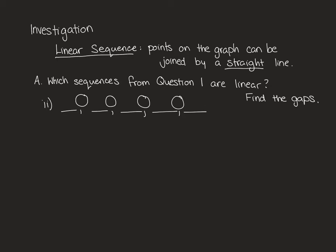The first part of the investigation is part A and they ask you to figure out which sequences from question 1 are linear and to find the gaps. They actually give the first one to you and they say that the second graph is linear. They've put the sequence on the line: 3, 6, 9, 12, 15. Then to prove that it's linear you can find the gap. To get from 3 to 6 we add 3, 6 to 9 add 3, 9 to 12 add 3, 12 to 15 add 3.